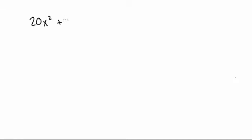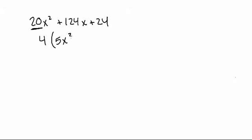Let's say you have the function 20x squared plus 124x plus 24 and you're asked to factor that. You have this number in front of the x squared, so that's going to make it a little bit more difficult to factor. The first step to factoring is always to take out any common terms. In this case, all of the numbers are even, so they're divisible by 2, but if you think about it a little bit more you'll realize they're also divisible by 4. So the first thing I'm going to do is take out that 4 and factor it out of each term, giving us 4 times 5x squared plus 31x plus 6.